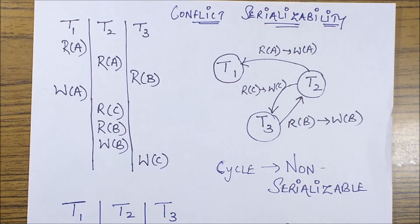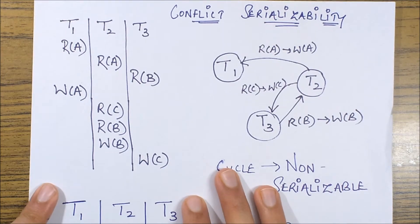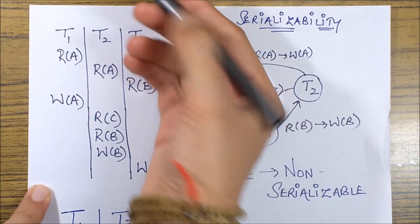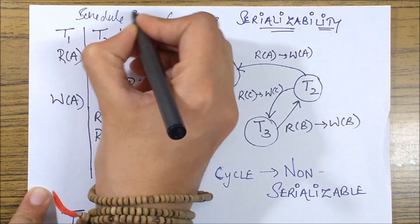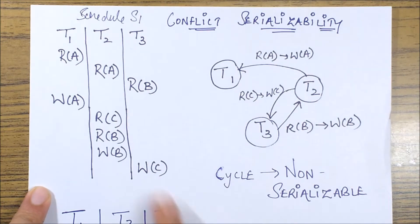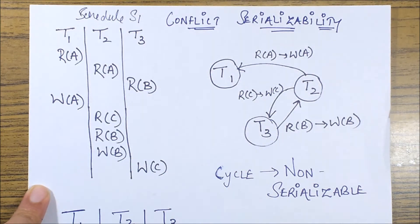Let's start with the first example. So I've been given a schedule. Let's label it as schedule S1 wherein we have three transactions working concurrently. So I'll just start with the conflict serializability concept.